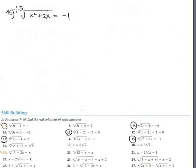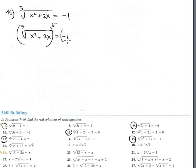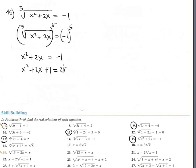Number 15 contains a fifth root. Copy the equation and raise both sides to the 5th power. The expression inside the radical equals negative 1, because negative 1 to the 5th power is negative 1. So x squared plus 2x plus 1 equals 0 in standard form.